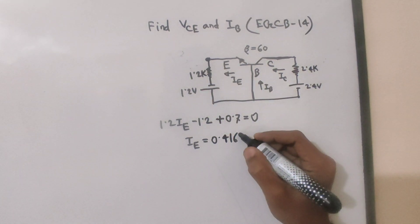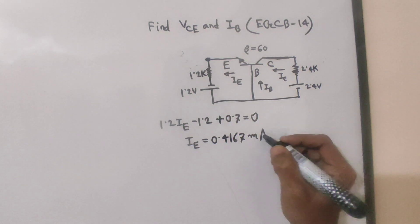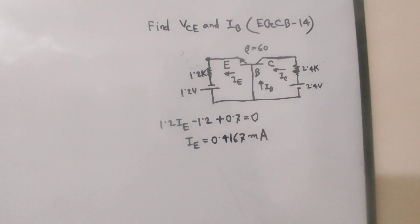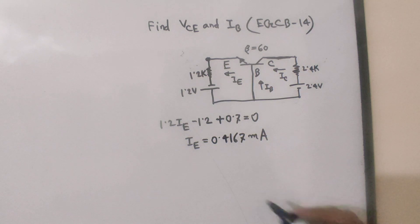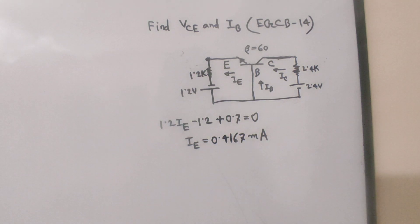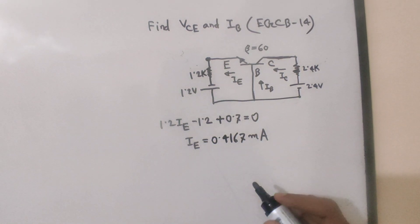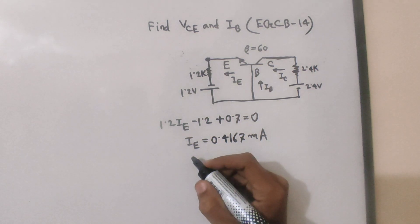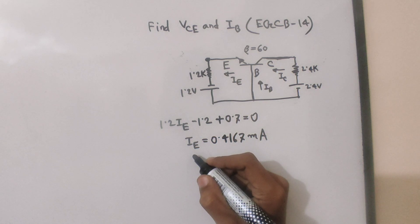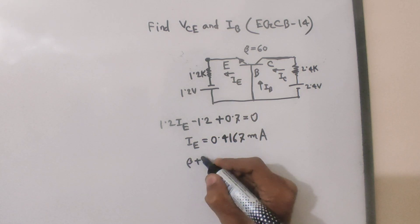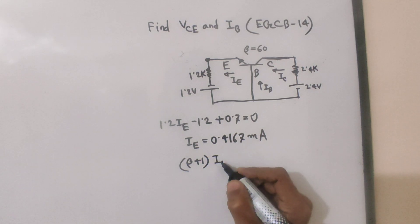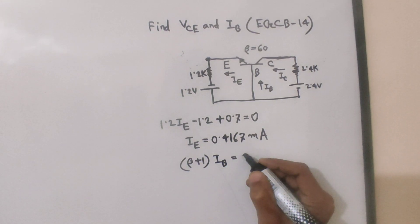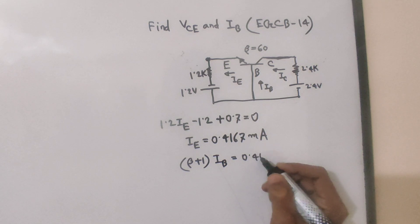The current relationship is that I equals beta plus one into IE. Since IE equals IV plus IC, and IV is much smaller, we can say I is approximately equal to beta plus one into IV. Therefore, IV equals 0.4167 divided by beta plus one.